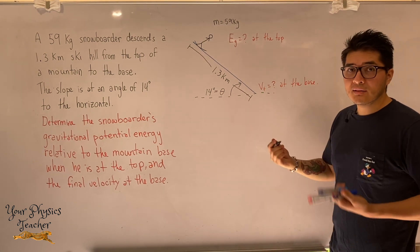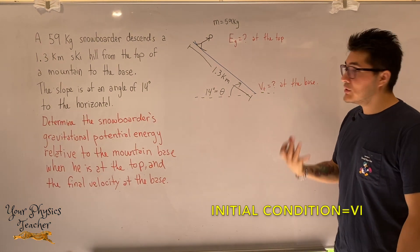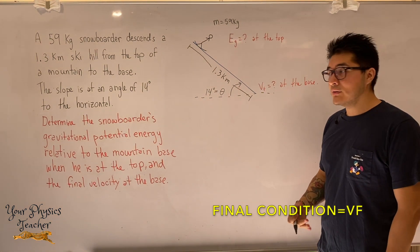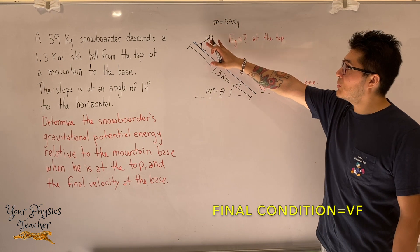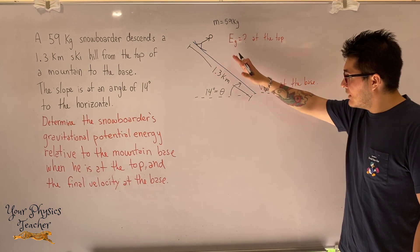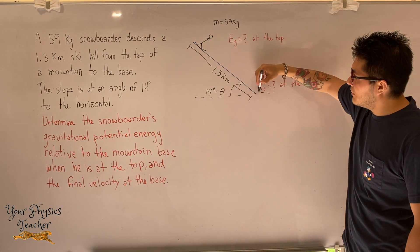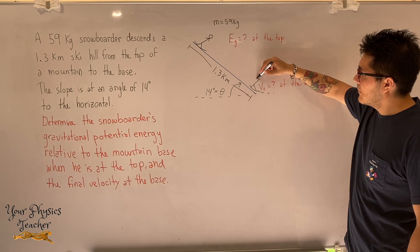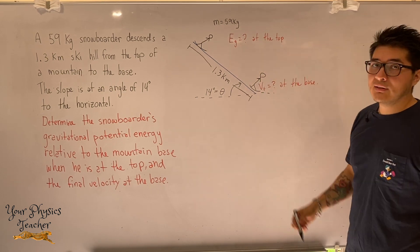That means it's a good idea to recognize our initial conditions, our final conditions. So initially our snowboarder is at the top. They descend down the ski hill. And then at the bottom, we want to find out what the velocity is.